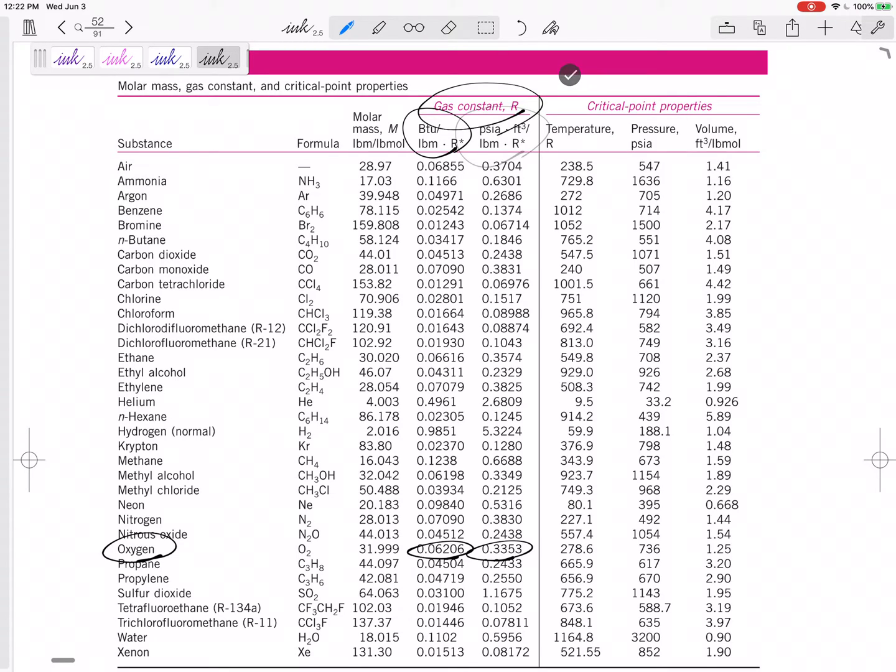Do we want BTU? All right, so here it is. Do we want BTU or do we want PSIA feet cubed? I saw in the problem statement feet cubed. I saw PSIA. Let's use this one, 0.3353 PSIA feet cubed per pound mass per Rankine.